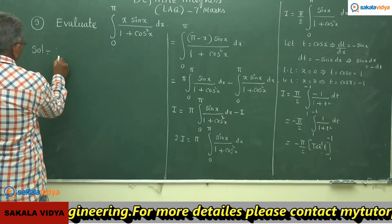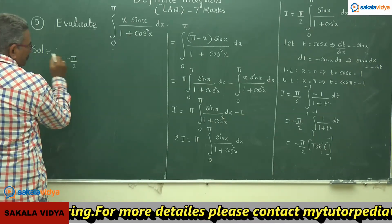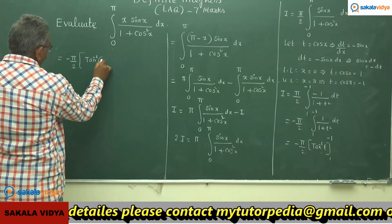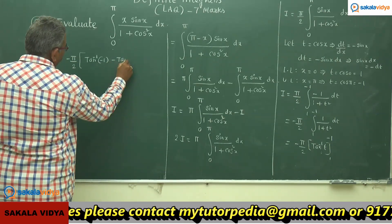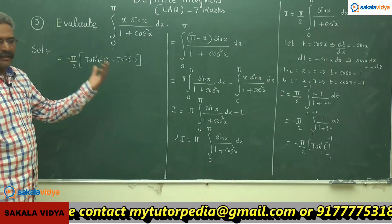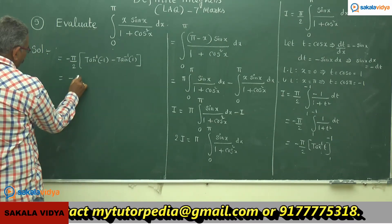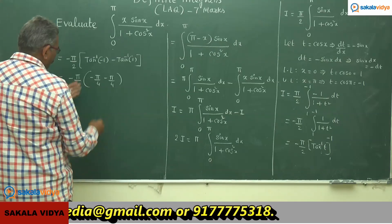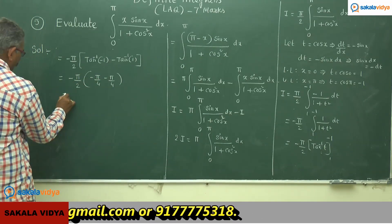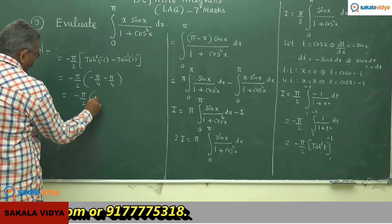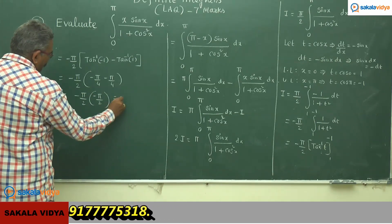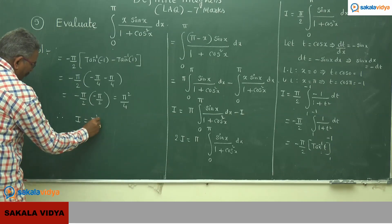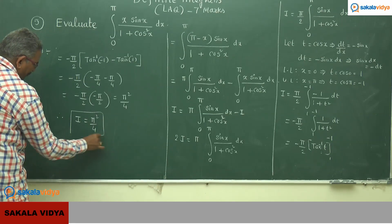This equals minus (π/2) times [tan⁻¹(−1) − tan⁻¹(1)]. From inverse trigonometric functions, tan⁻¹(−1) = −π/4 and tan⁻¹(1) = π/4. So we have minus (π/2) times (−π/4 − π/4) = minus (π/2) times (−π/2) = π²/4. Therefore, I equals π²/4. Hence, it has been solved.